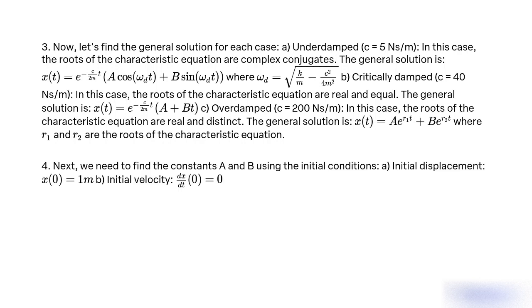Next, we need to find the constants A and B using the initial conditions: initial displacement x(0) = 1, and initial velocity dx/dt(0) = 0.